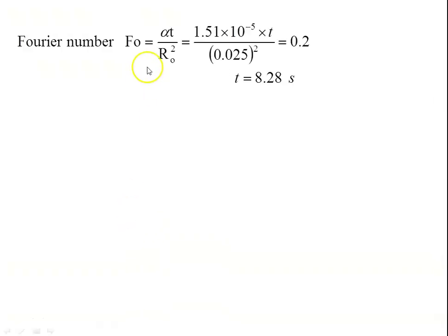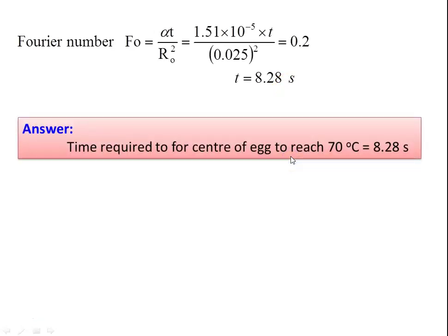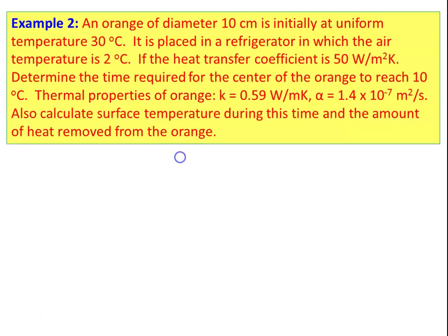From the Fourier number: Fo = α·t / r_o² = 0.2. So 1.5 × 10⁻⁵ × t / (0.025)² = 0.2, solving gives the time required for the egg center to reach 70°C as 8.25 seconds.